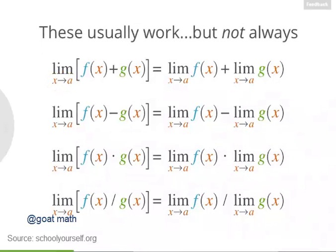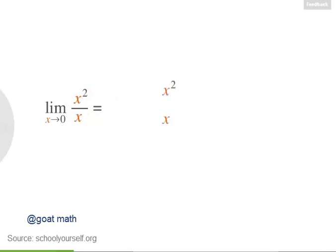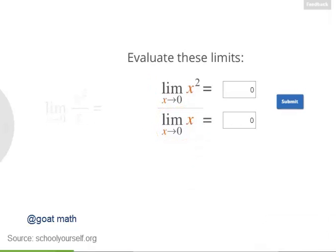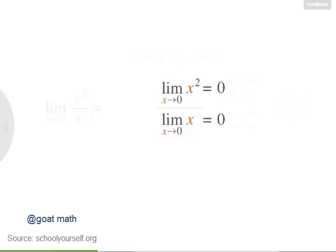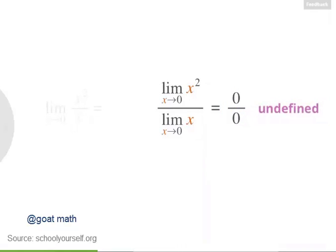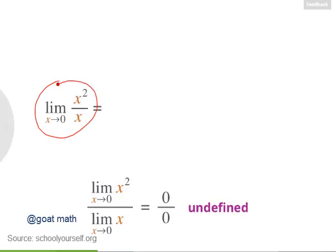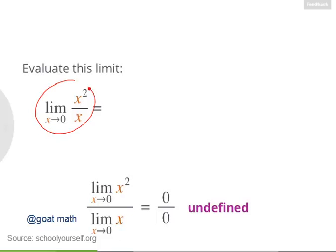Now these four rules usually work, but not always — there are a few exceptions. Consider the limit as x approaches 0 of x squared over x. Let's try splitting this into two separate limits: the limit of x squared divided by the limit of x as x approaches 0. Both of these limits equal 0, because as x gets very, very close to 0, both x squared and x approach 0. So this gives us 0 divided by 0, which is undefined. But is our original limit undefined, or does it equal a specific value?